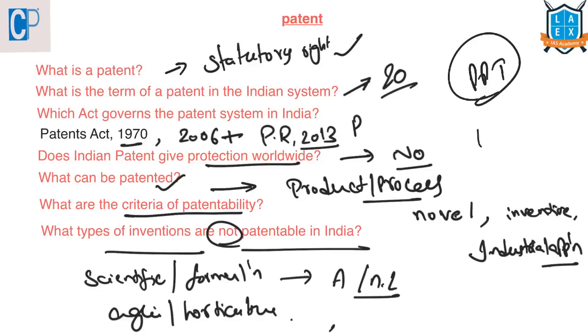Inventions that are related to atomic energy also cannot be patented. In the notes, I have given detailed notes for what types of inventions are not patentable in India. Please look into the notes.